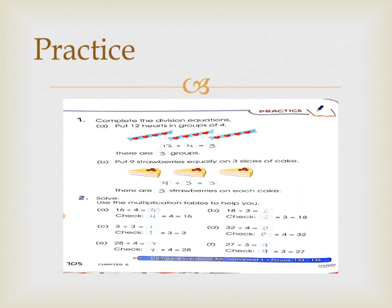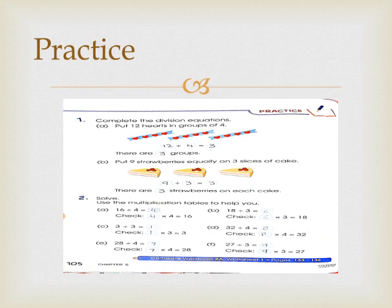Question number 2: Solve using the multiplication tables to help you. The multiplication and division tables you learned in the previous slides will help. 16 divided by 4 equals 4 — because 4 4s are 16. Division and multiplication are the reverse of each other. 18 divided by 3 equals 6 — 6 3s are 18. 3 divided by 3 equals 1 — 1 3s are 3. 32 divided by 4 equals 8 — 8 4s are 32. 28 divided by 4 equals 7 — 7 4s are 28. 27 divided by 3 equals 9 — 9 3s are 27.